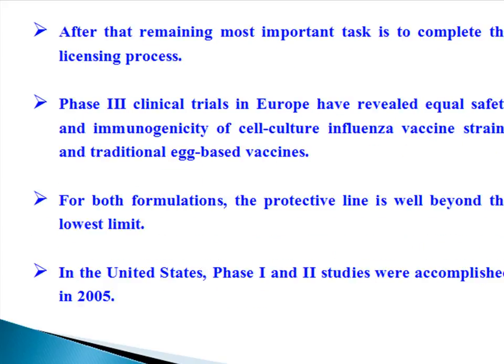After that, the remaining most important task is to complete the licensing process. Phase III clinical trials in Europe have revealed equal safety and immunogenicity of cell culture influenza vaccine strains and traditional egg-based vaccines. For both formulations, the protective level is well beyond the minimum limit. In the United States, Phase I and II studies were accomplished in 2005.